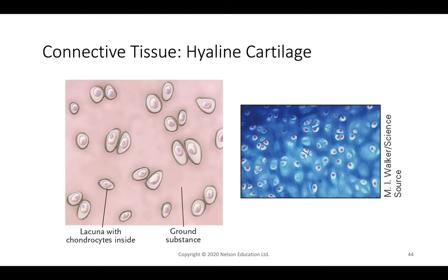Cartilage types include hyaline and elastic cartilage. Hyaline cartilage contains lacunae — small holes — with chondrocytes inside and surrounding ground substance. Cartilage can be a precursor to bone, ossifying during embryonic development. It is found in ears and noses in adults. Under the microscope, lacunae appear as empty spaces with chondrocytes inside, resembling sea urchins carved into rock.